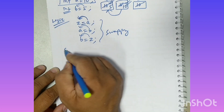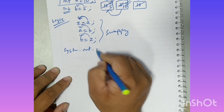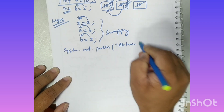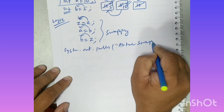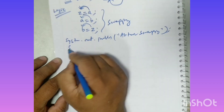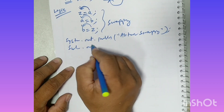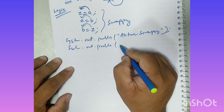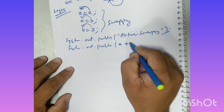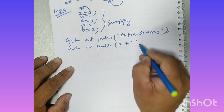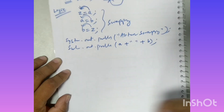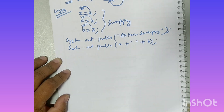Now you have to display the result. Use system.out.println — I think you know it better. After swapping, display the value: system.out.println, then A, plus concatenation operator, some space, plus concatenation operator, then B. In this way you will get the values after swapping, and this is how you solve this kind of problem.